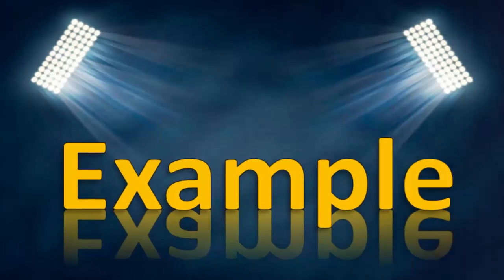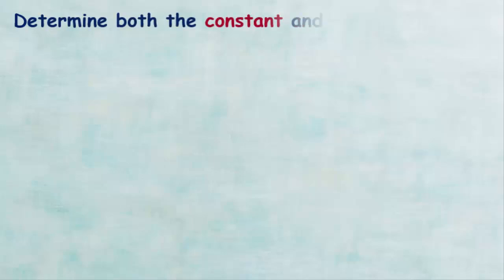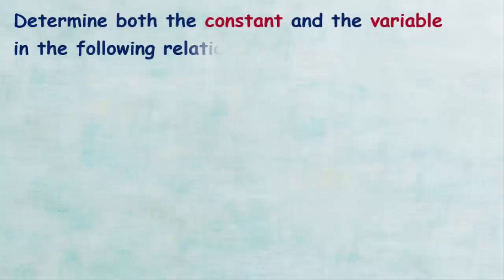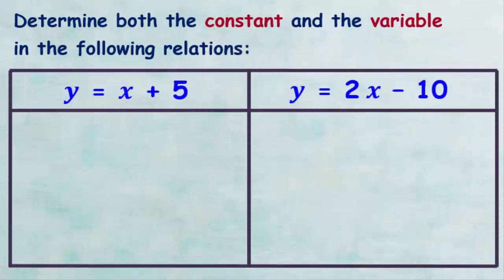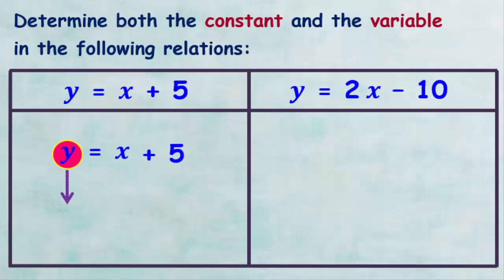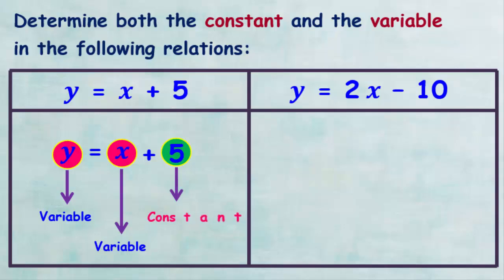Now let's see an example of how to determine the constant and variable in a mathematical relation. We want to determine both constant and variable in the following relations. The first mathematical relation is Y equals X plus 5. We notice that the symbol Y represents a variable and the symbol X represents a variable, while the number 5 represents a constant. So X and Y are variables and 5 is a constant.